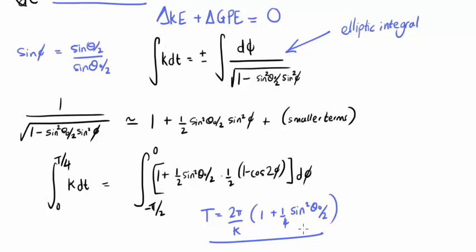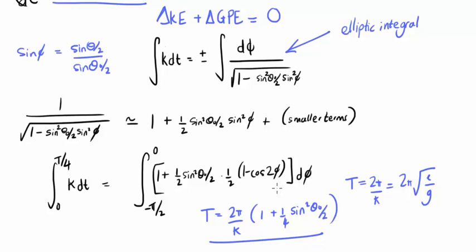Notice that if we assume theta 0 is small, so that this term is approximately 0, then we obtain the familiar result T equals 2 pi over k, which is 2 pi root l over g, for the simple pendulum. It's also possible to obtain further corrections to this result by continuing the series expansion to include smaller terms.